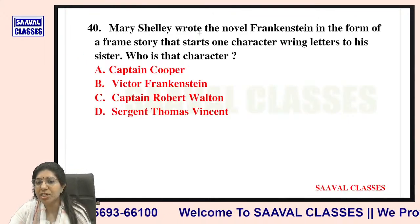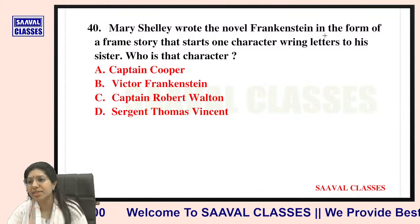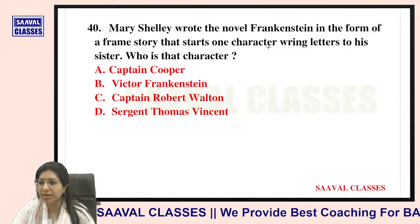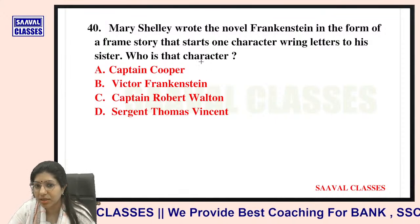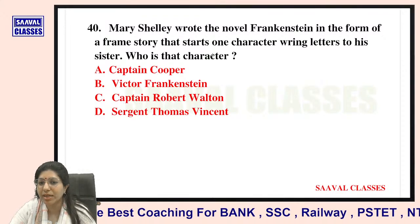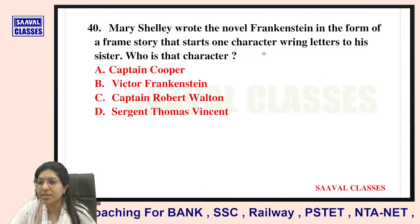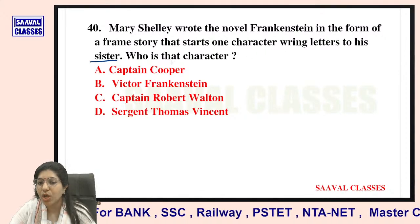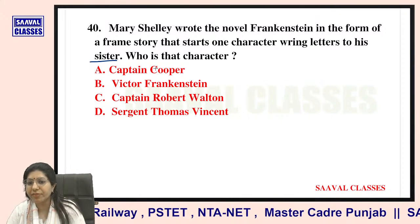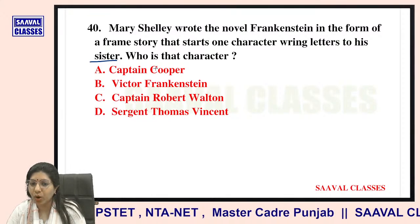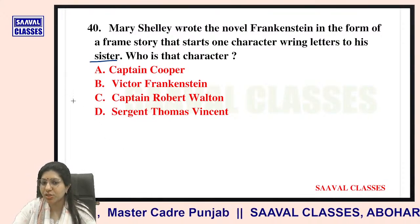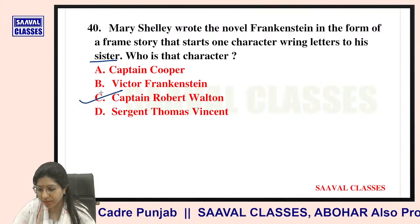Question number forty: Mary Shelley wrote Frankenstein in the form of a framed story that starts with one character writing letters to his sister. Who is that character? Options are Captain Cooper, Victor Frankenstein, Captain Robert Walton, or Sergeant Thomas Vincent. That is Captain Robert Walton — very good.